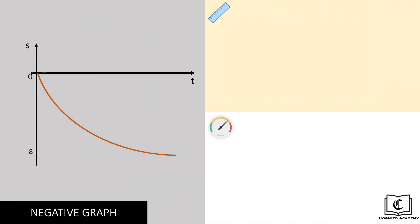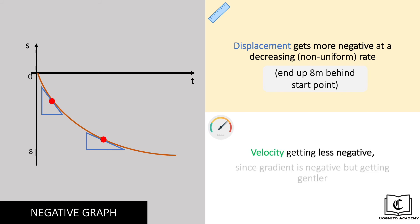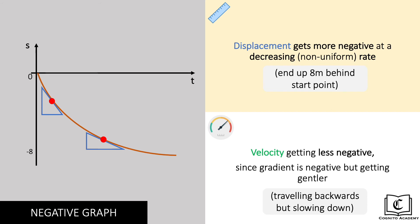Next up, we can see that displacement is getting more negative here from 0 to negative 8 meters, but at a decreasing rate. This object ends up 8 meters behind the original start point, like in the previous graph. Looking at this gradient, the gradient is pointing downwards but it's becoming gentler, meaning that gradient is negative but getting less negative. Hence, velocity is negative but getting less negative also — or in other words, the object is travelling backwards but slowing down.